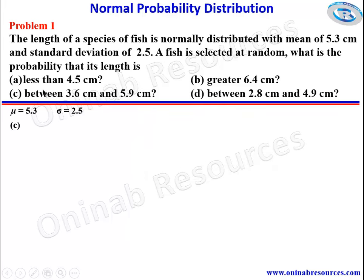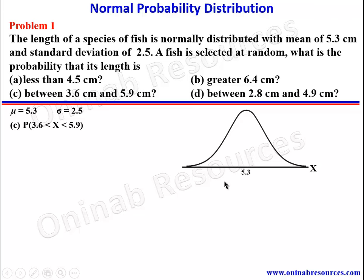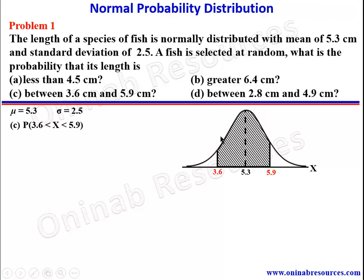We then go for part C. For C, we have the length between 3.6 and 5.9 — that is P(3.6 < x < 5.9). From the curve, the mean is here; 3.6 is to the left of the mean and 5.9 is to the right. This area between these two lines is what we are looking for, representing the probability between 3.6 and 5.9.